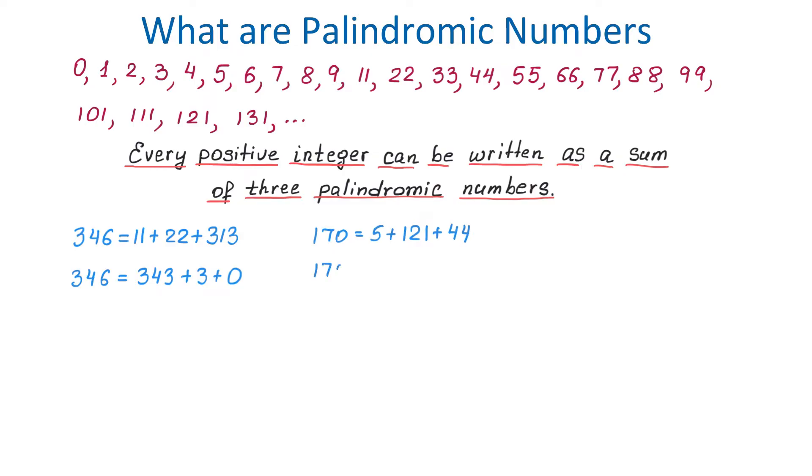The number 170 can be represented as 5 plus 121 plus 44, or it could be represented as 66 plus 101 plus 3, or 161 plus 9 plus 0. As you see, each of these numbers can be represented by a different group of palindromic numbers.